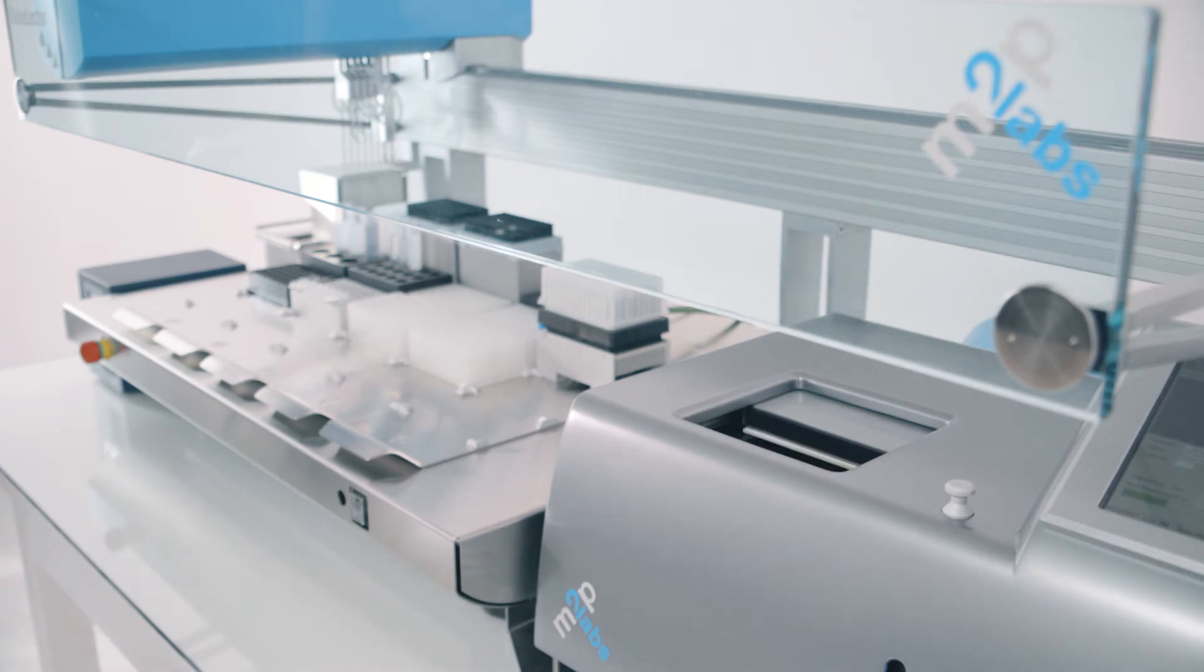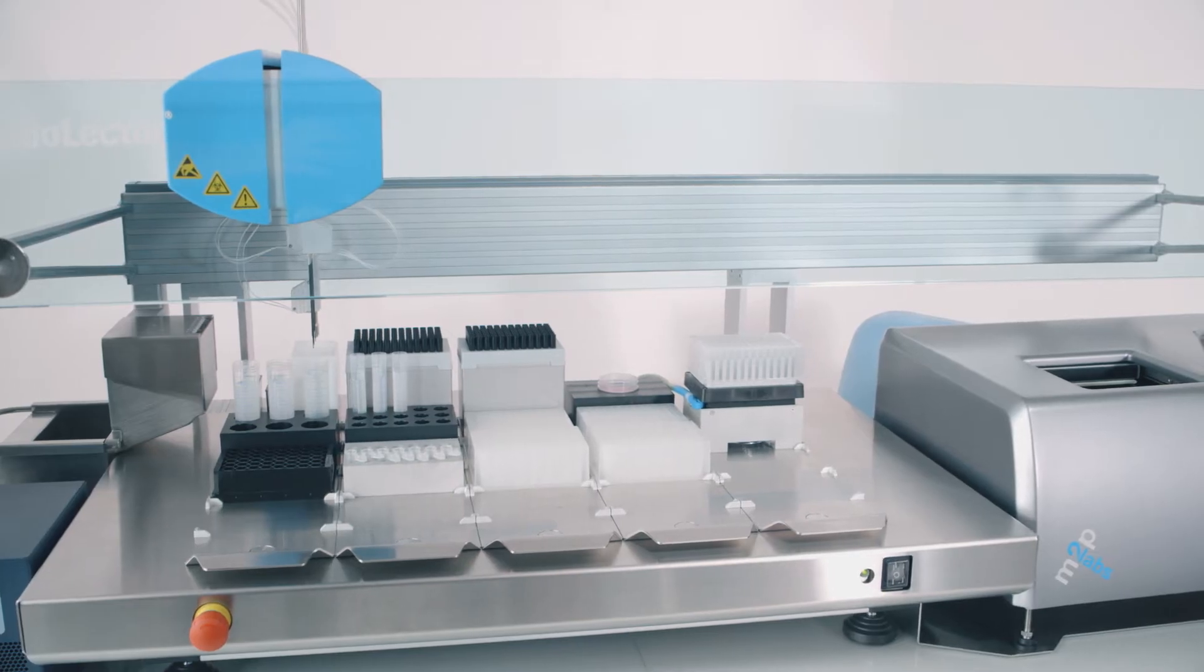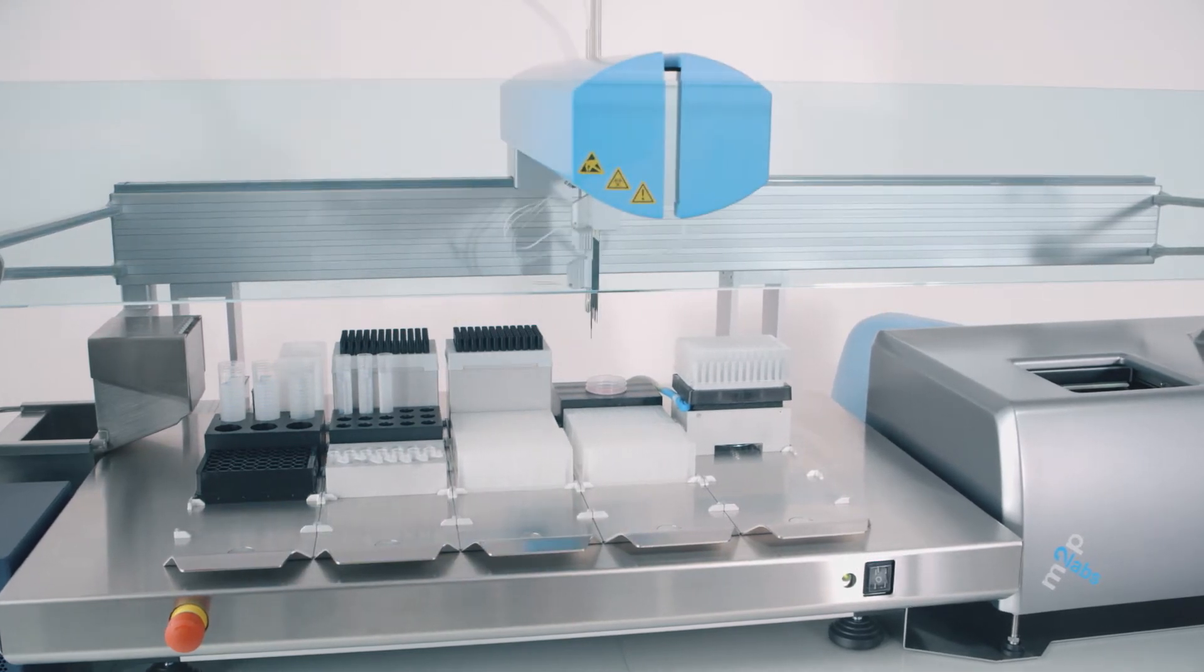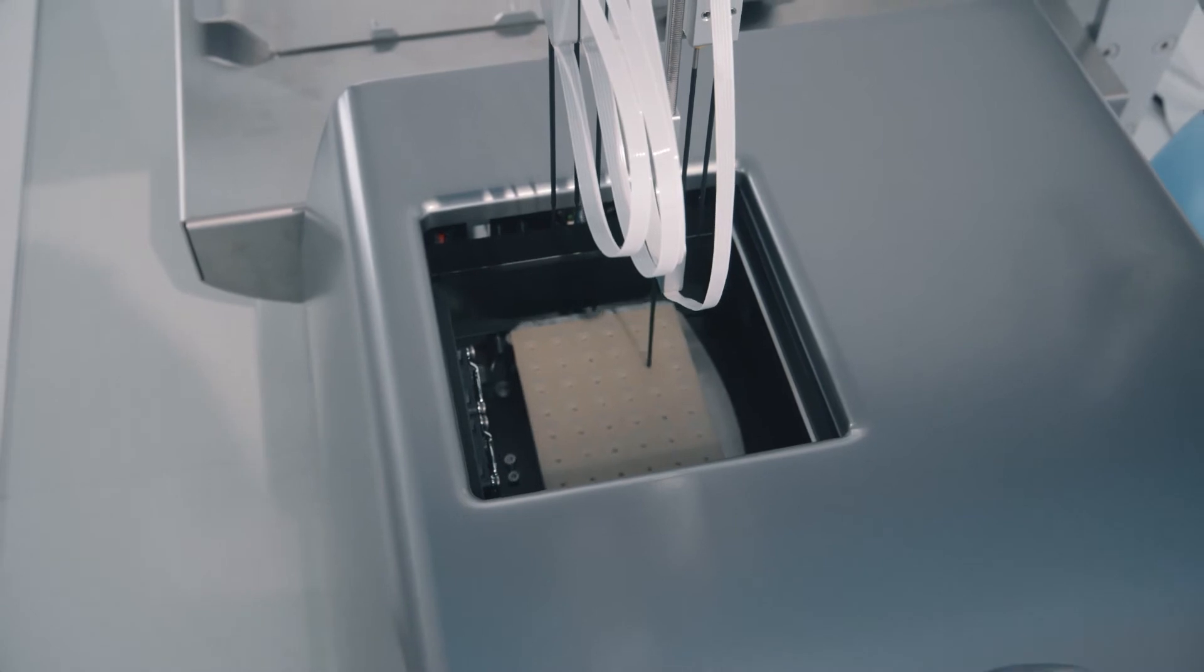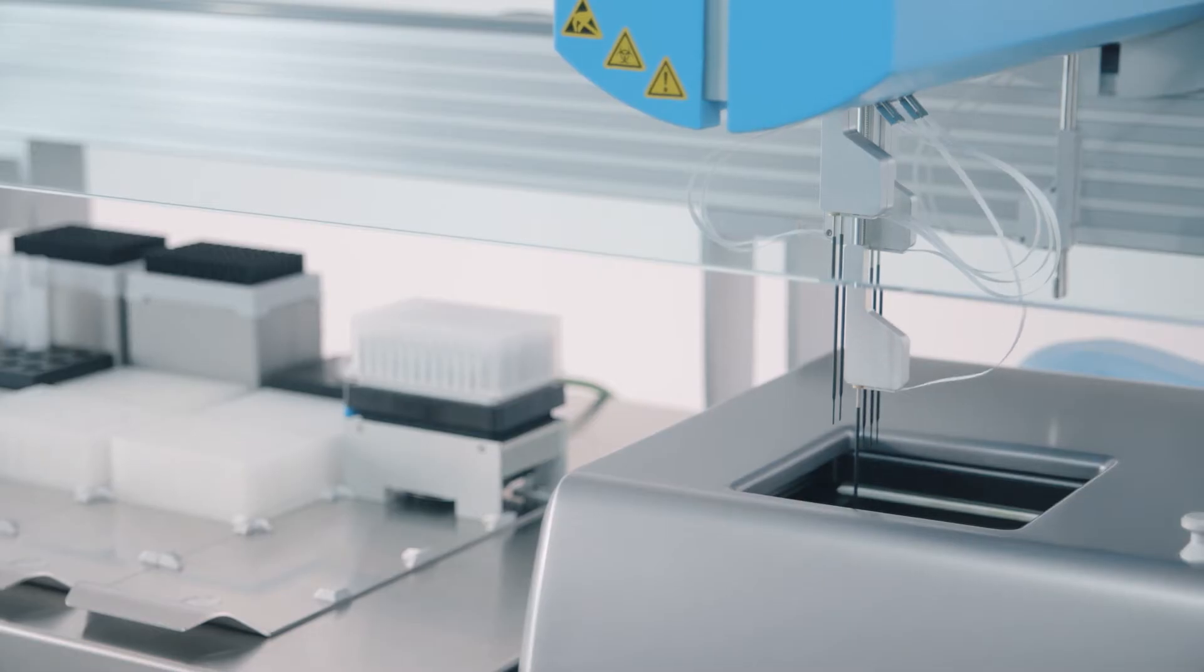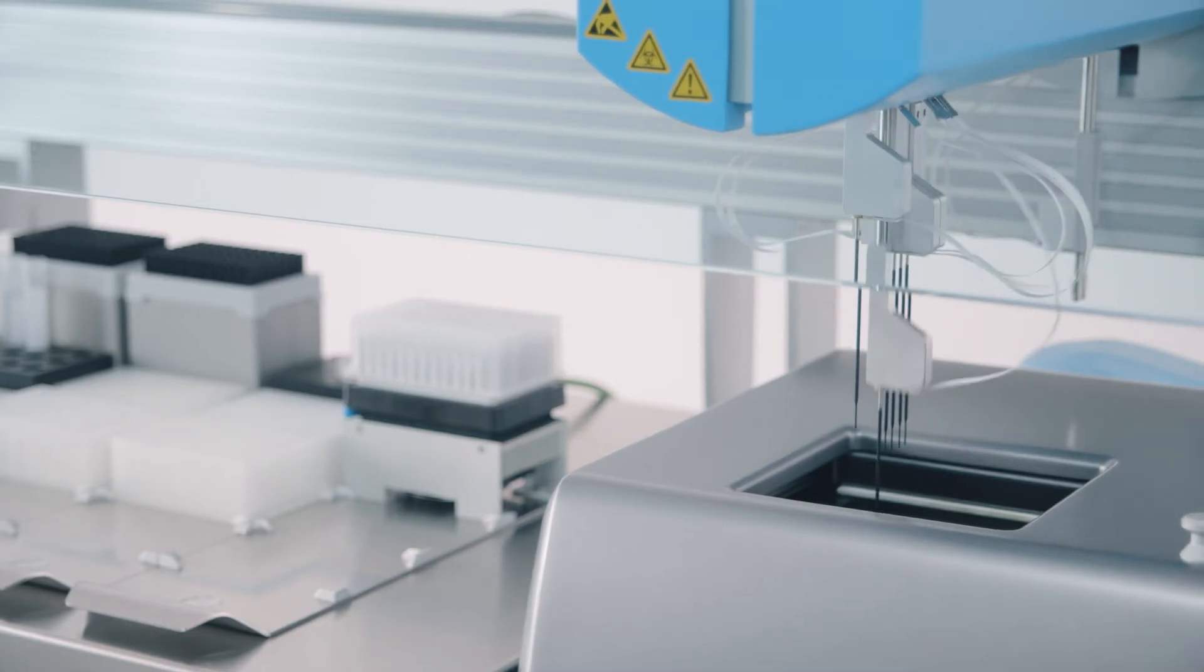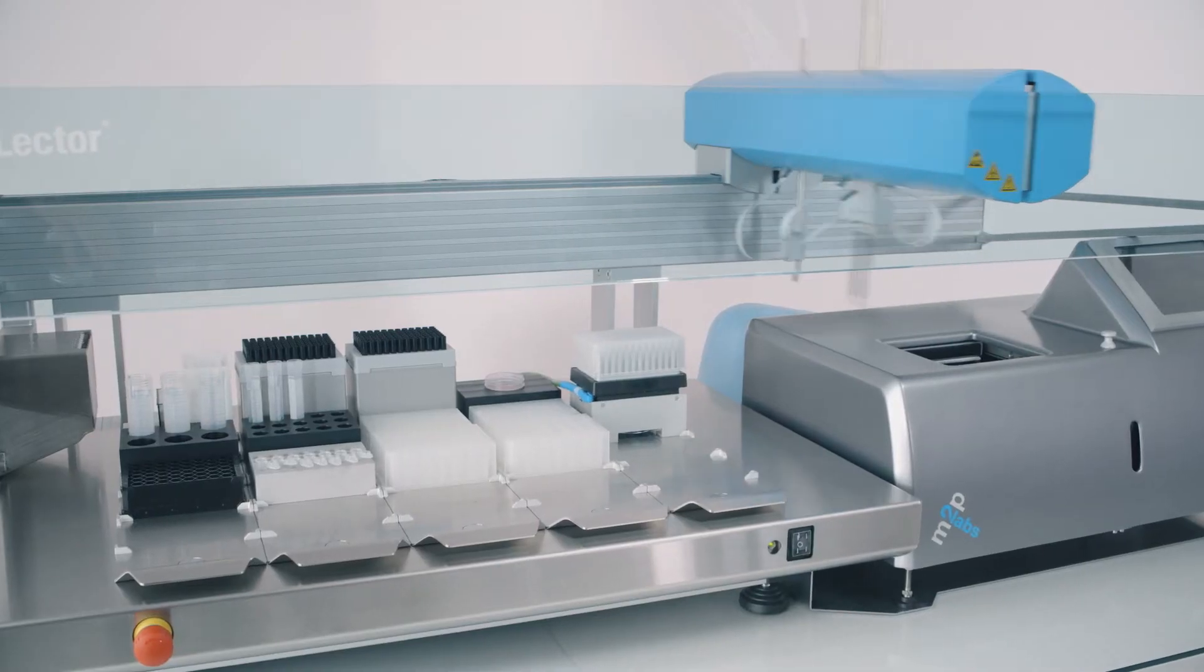With the Robolector, the user does not need to laboriously inoculate cultivation MTPs by hand. The operator only has to set up the agent software and place the MTP into the Biolector. The liquid handling robot automatically carries out all steps to inoculate the main cultures homogeneously.